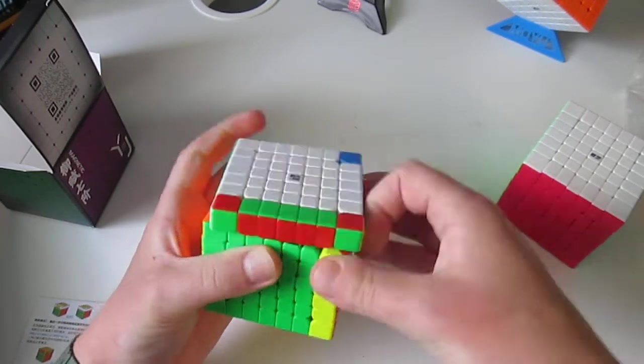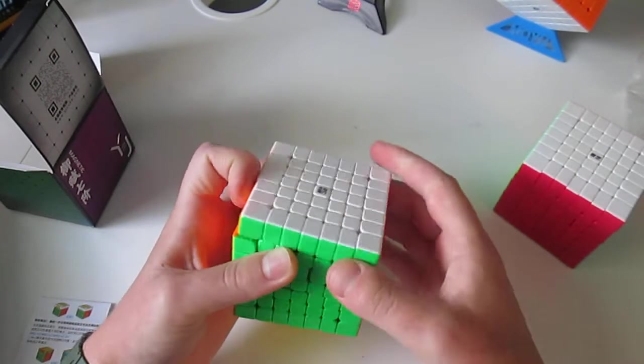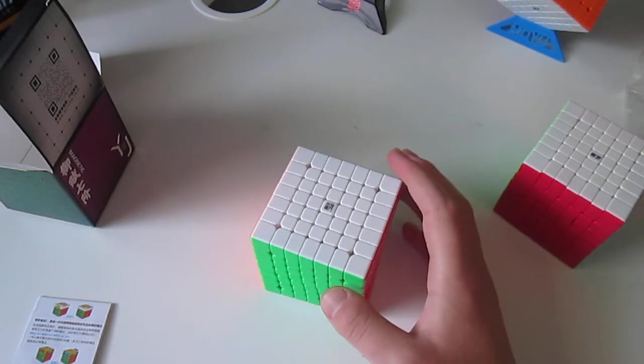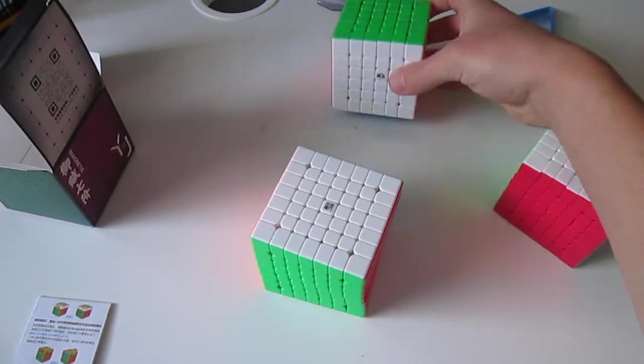But, just like all of my YJ Cubes, I don't really like the logo on them. And I want them to match my other ones. So there's my 6x6. And then here are the Speed Cube Shop logos.